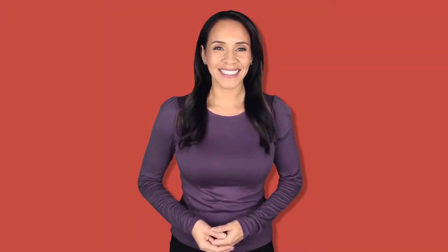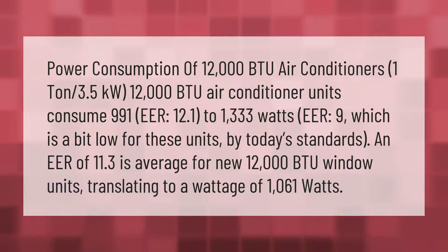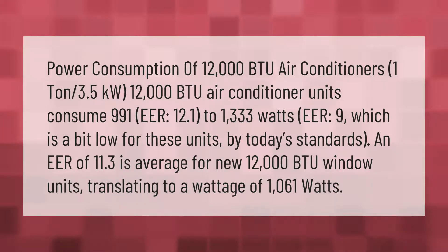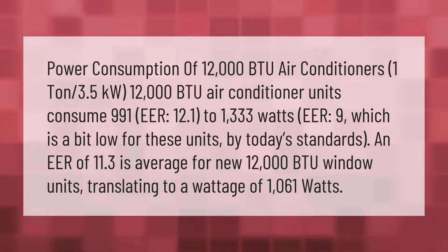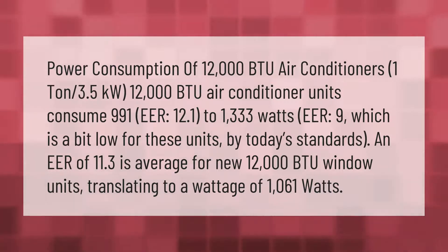Power consumption of 12,000 BTU air conditioners (one ton): at 3.5 kilowatts, 12,000 BTU air conditioner units consume between 991 watts (EER 12.1) and 1,333 watts (EER 9). An EER of 9 is a bit low by today's standards. An EER of 11.3 is average for new 12,000 BTU window units, translating to a wattage of 1,061 watts.